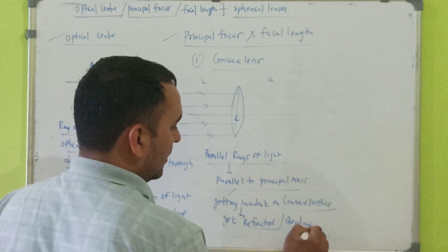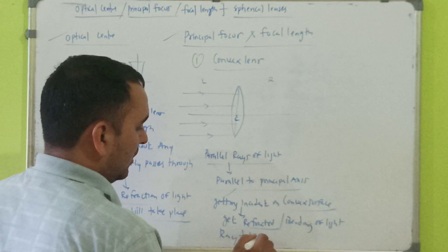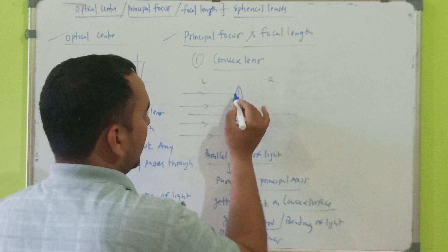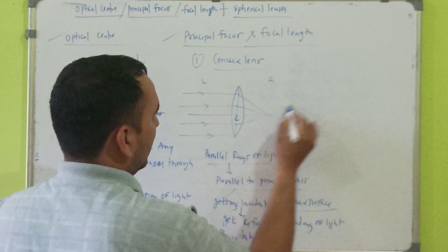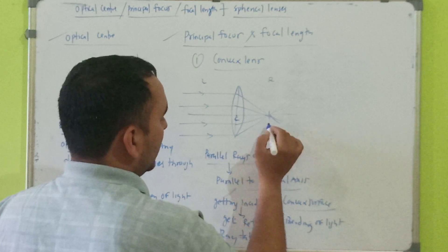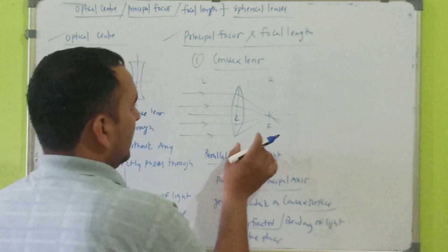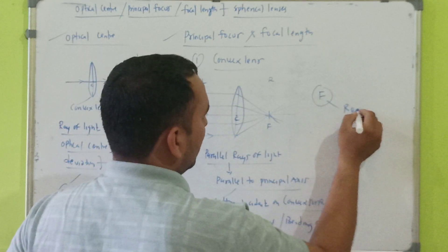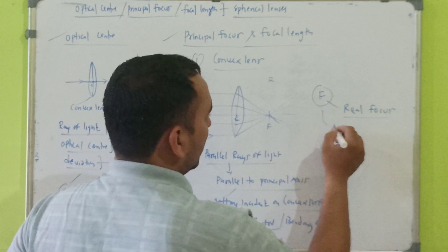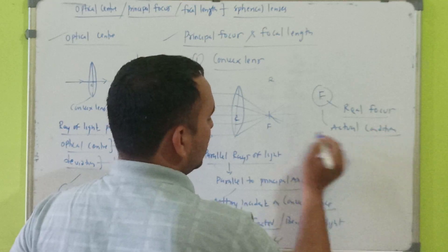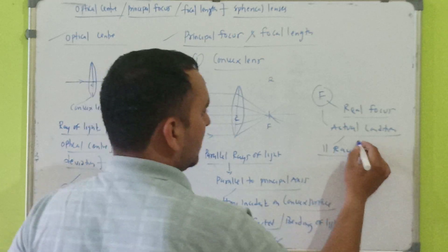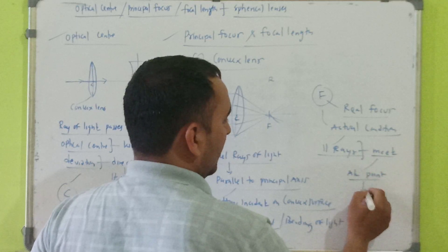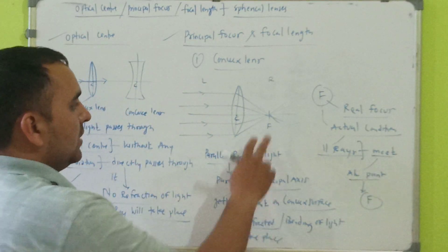These are parallel rays of light, parallel to the principal axis, getting incident on the convex surface of the convex lens. They get refracted — that is, bending of light rays takes place — in such a way that after refraction these rays meet at a point. That point is known as your principal focus. In case of a convex lens, the principal focus is a real focus, because in actual conditions these parallel rays meet at that point.